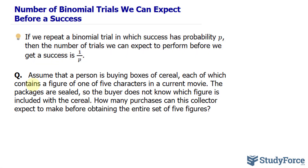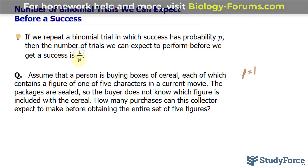Let's pretend that you're starting off with no figures. If you purchase any box, you will get one of the five figures regardless. So the probability of getting any figure in the first purchase is 1. If we set P equal to 1 and substitute that into the formula, we get 1.